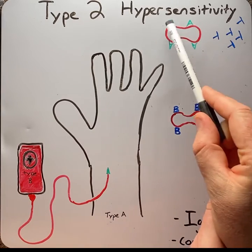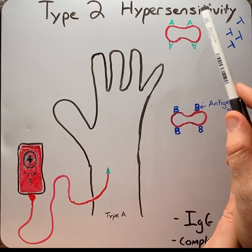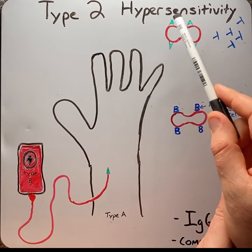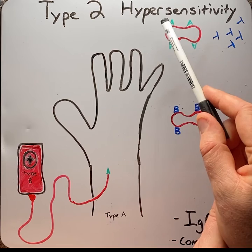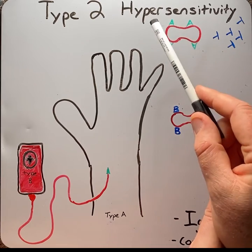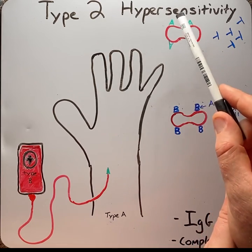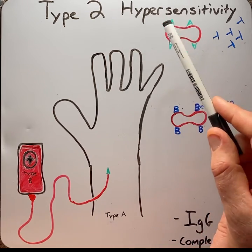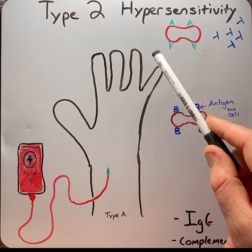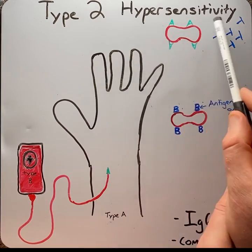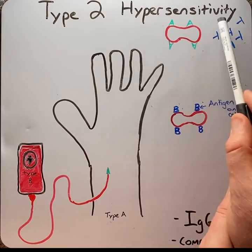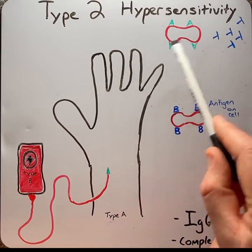Hypersensitivity reactions are excessive immune responses to normally harmless substances that induce inflammation and lead to cell or tissue damage or injury. There are four types of hypersensitivity reactions.